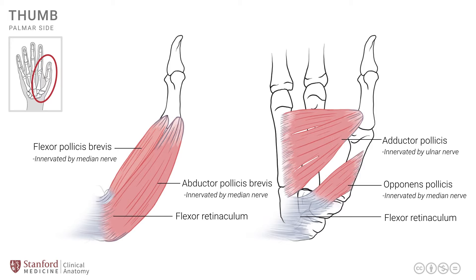So these are the muscles at the base of the thumb: the three that participate in the formation of the thenar group and the thenar eminence, and the fourth — the adductor pollicis — located in the depths of the palm of the hand.